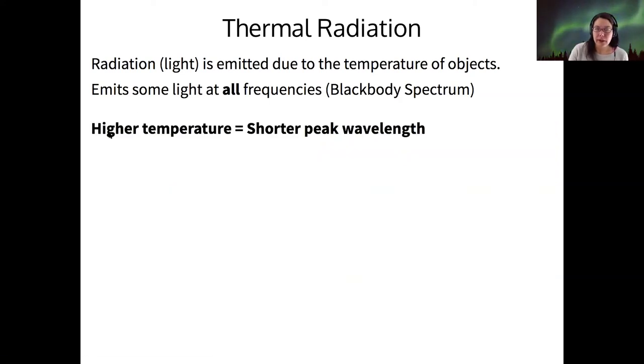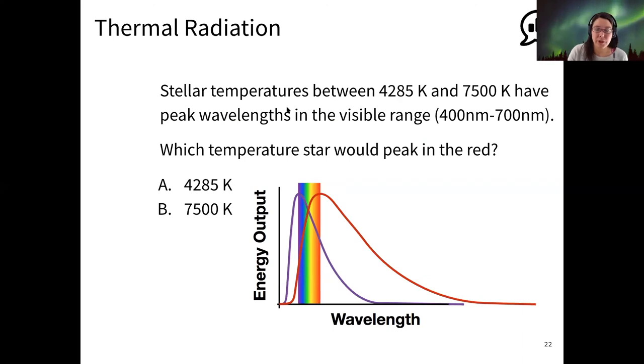So I told you that higher temperatures correspond to shorter peak wavelengths. And so my question for you is if I measure the spectra for different kinds of stars, let's say that I have one that's 4285 Kelvin and one that's 7500 Kelvin, which of those temperatures must be the one that peaks in the red? I see the most votes for A, that the lower temperature object peaks in the red. That's exactly right. So the lower the temperature, the lower the frequency of light it will emit, and therefore the longer the wavelength.